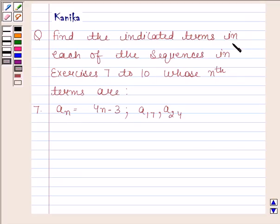Find the indicated terms in the sequence from exercise 7, whose nth term is an = 4n - 3. Specifically, find a17 and a24.